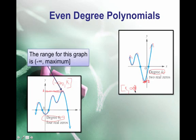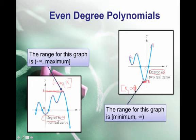For even degree polynomials, the range is either (-∞, maximum] or [minimum, ∞), depending on how the polynomial is oriented.